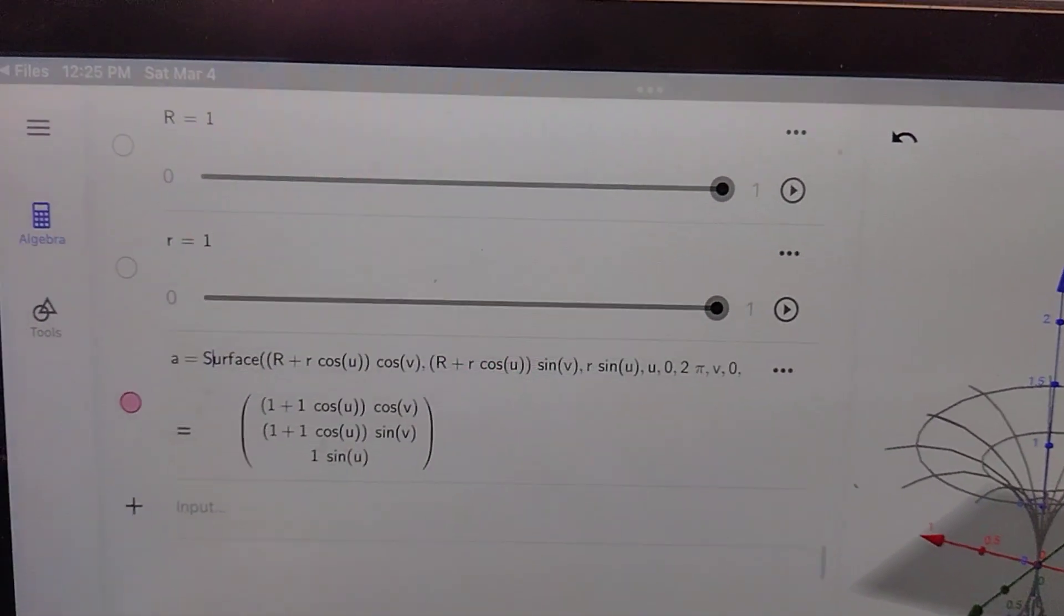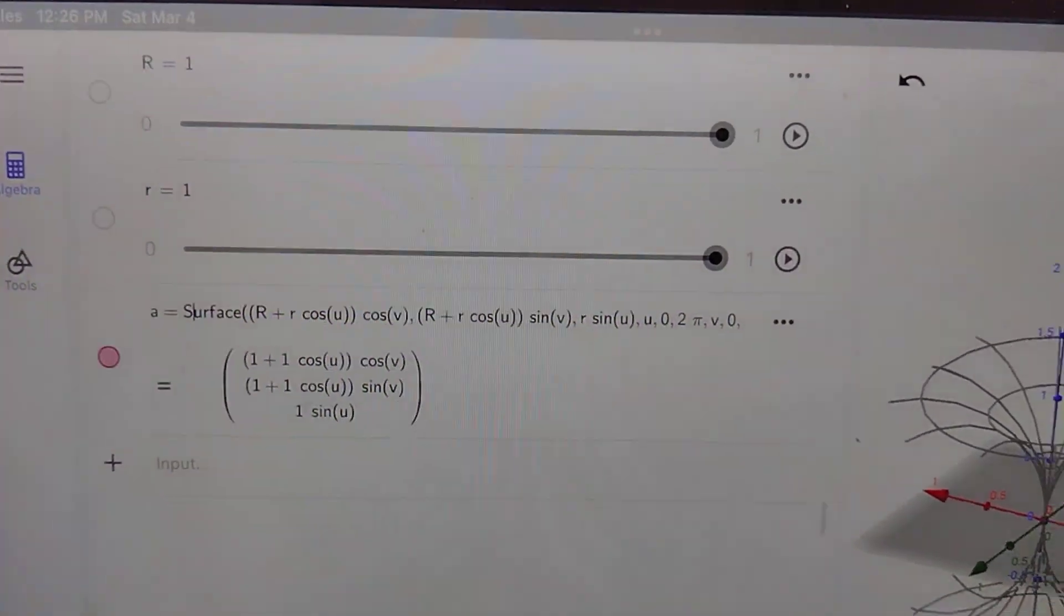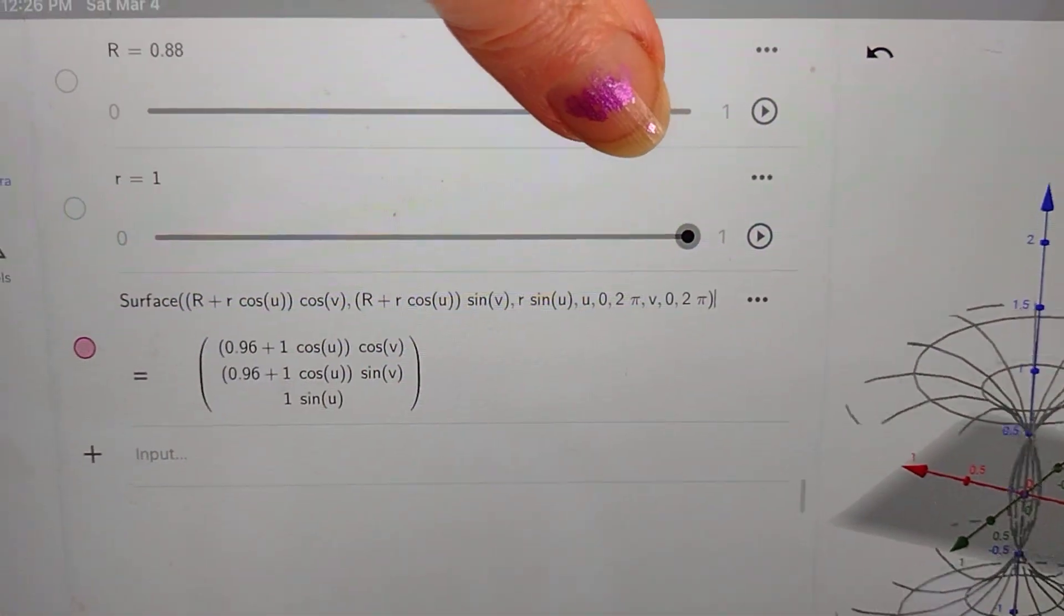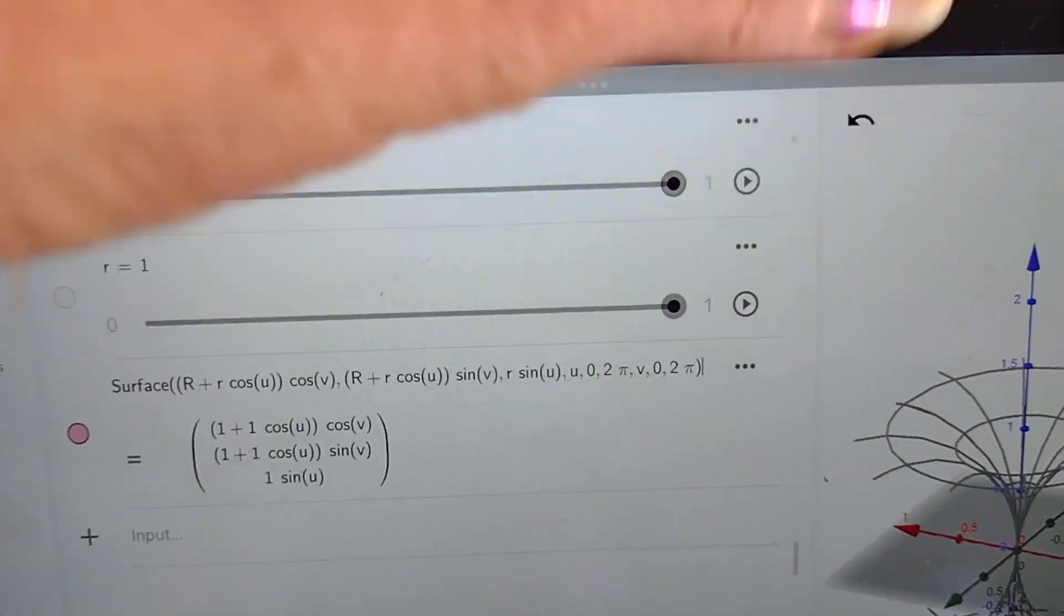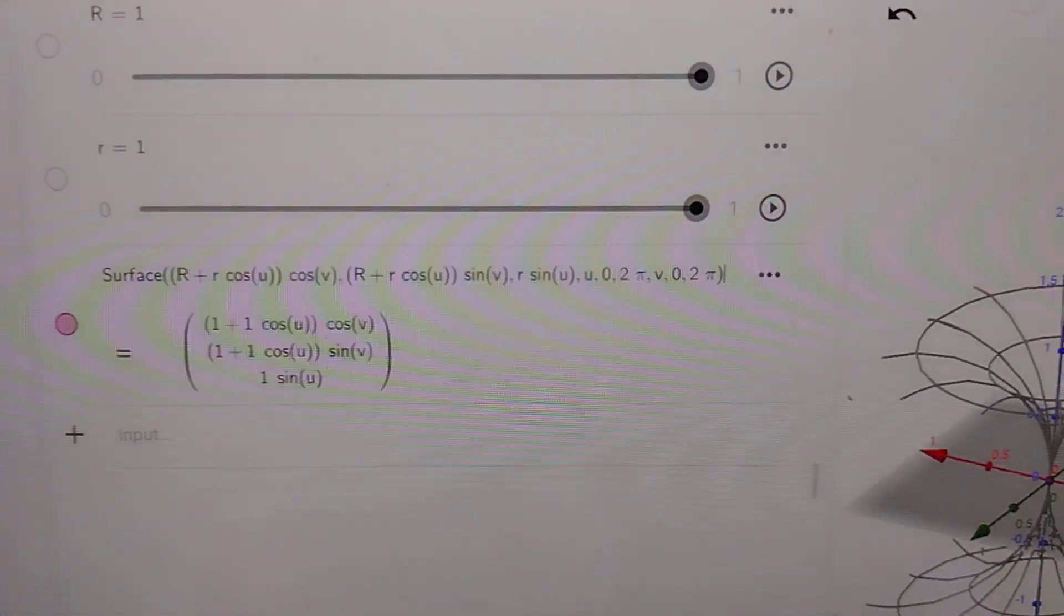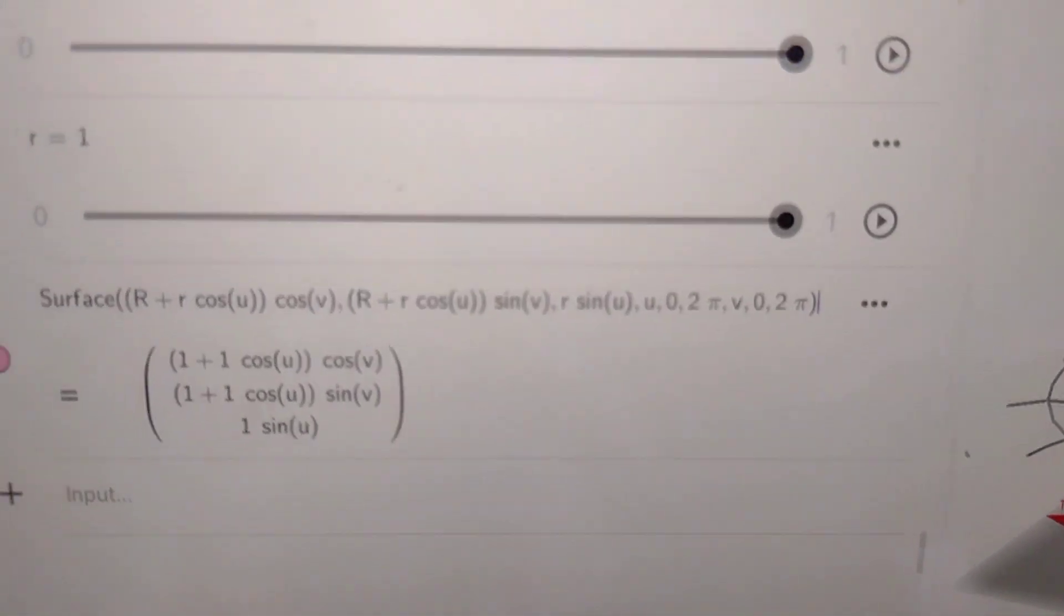I'm going to slide this back. Let's get a good different value for that, there we go. Okay so I'm going to put it back to one but notice that's a one, that's an addition.